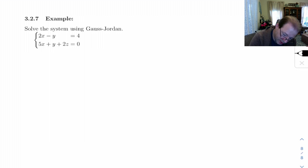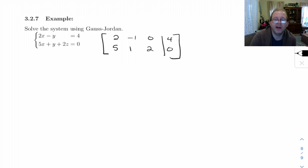So let's write this as a matrix. We get 2, negative 1, 0, 4. Then we get 5, 1, 2, 0. And we have to row reduce this.